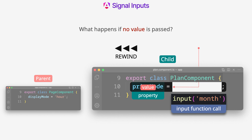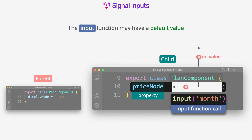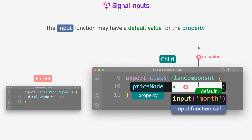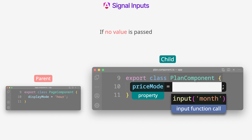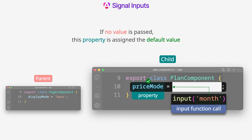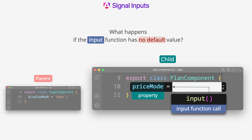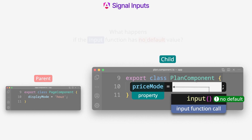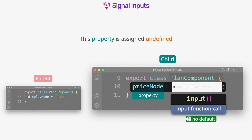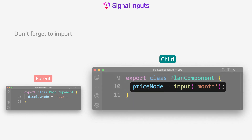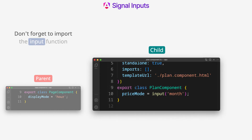What happens if no value is passed? The input function may have a default value for the property, but this is optional. If no value is passed, the property is assigned the default value. If the input function has no default value, this property is assigned undefined. Don't forget to import the input function.